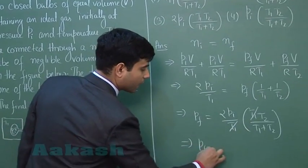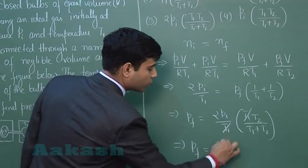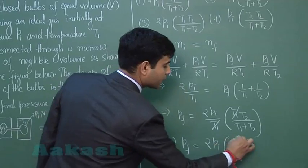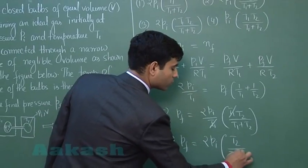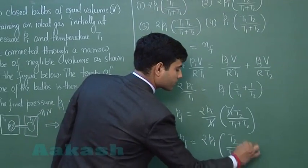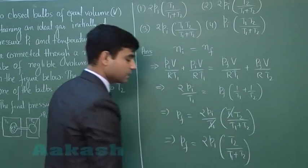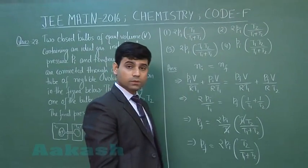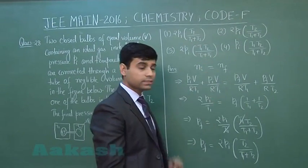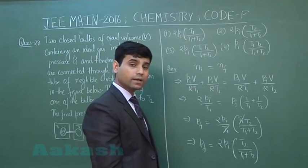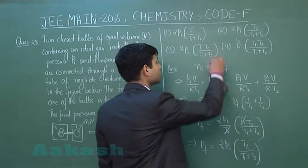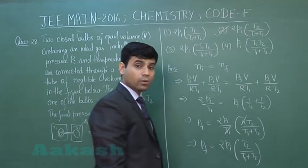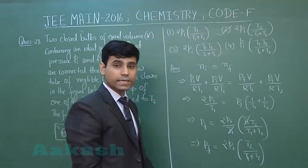The result is PF = 2·PI·T2/(T1+T2). This is the answer, and the second option matches this answer. So the correct answer for this question is option number 2. Now let us move to the next question.